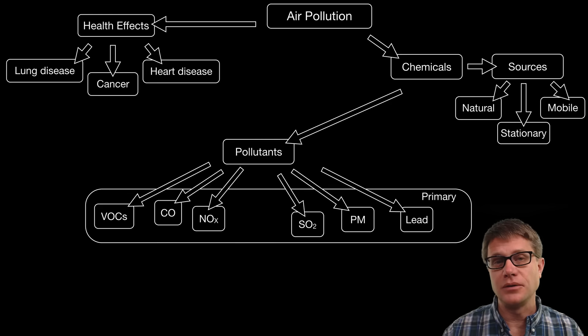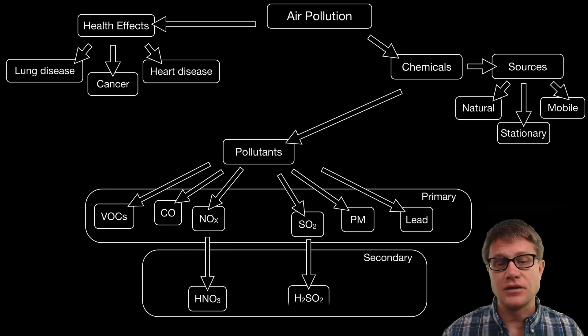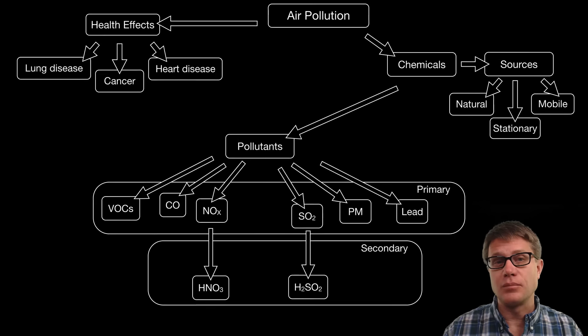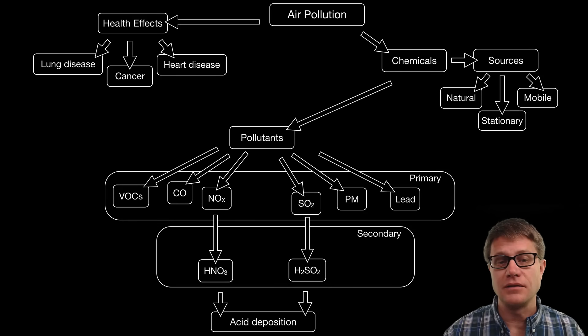These are all primary pollutants. That means they are produced by the source themselves. But they can combine with other chemicals in the atmosphere and produce secondary pollutants. So for example NOx can produce nitric acid. And sulfur dioxide can produce sulfuric acid. And these combined can produce acid rain or more generally acid deposition that has huge impacts on life.